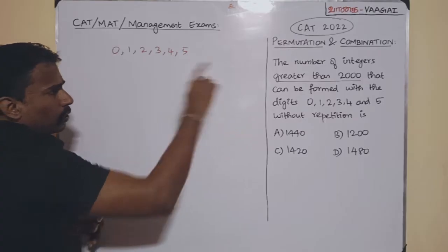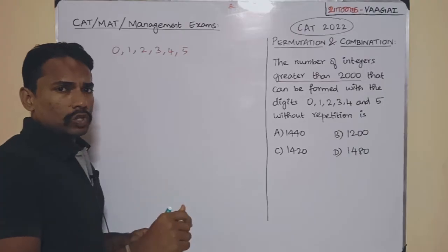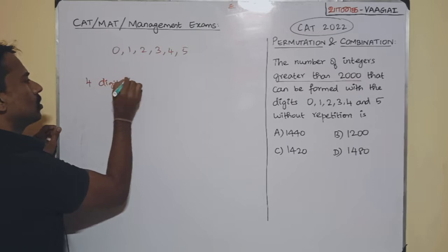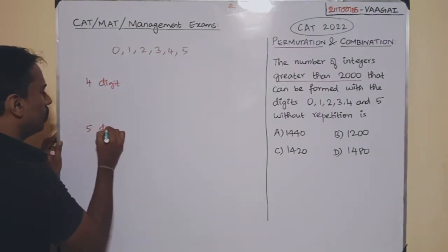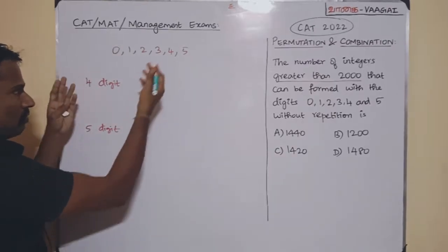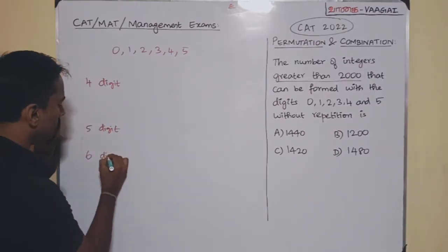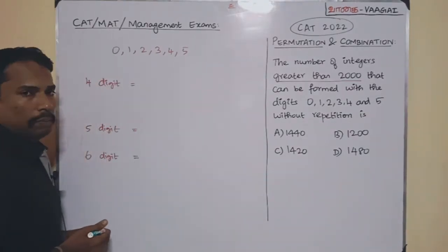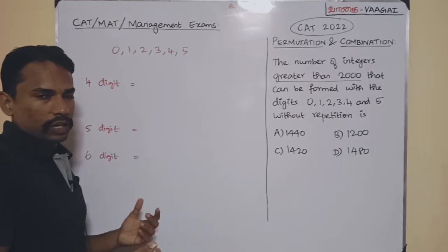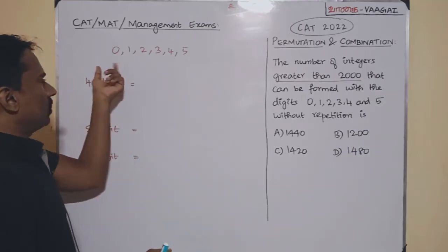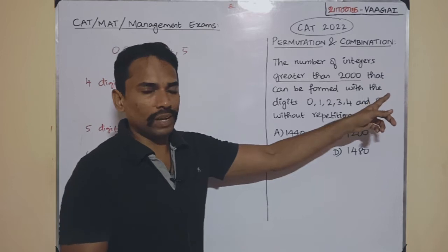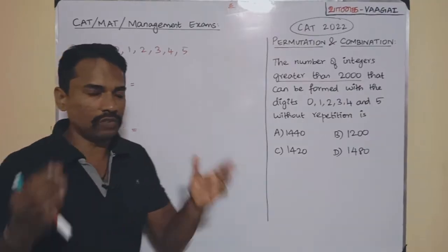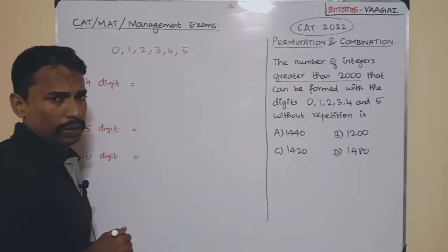Since the number must be greater than 2000, we can form four-digit numbers, five-digit numbers, or six-digit numbers. We cannot use fewer than four digits because a two- or three-digit number cannot exceed 2000, and we cannot go beyond six digits since we only have six available.